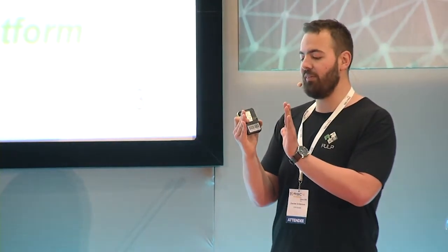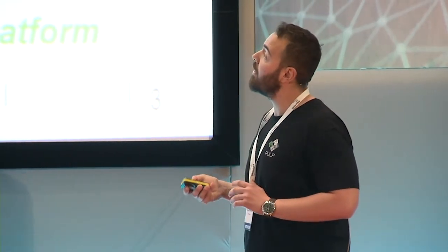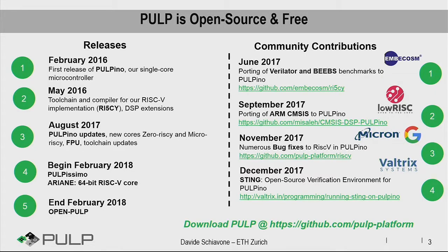Ariane and Florian, after me, will talk about the 64-bit core and OpenPULP, the name of our multi-core platform with eight cores. Basically, it's a single-core architecture extended with a cluster of eight cores. Since we are open source, we've seen a community growing around our project. Here you see a couple of the contributors for PULP — for instance, bug fixes on the RISC-V core, and also other companies that extended and provided us feedback.